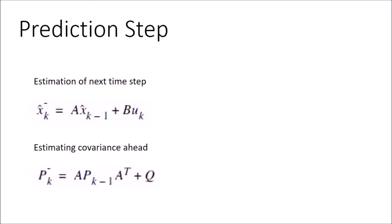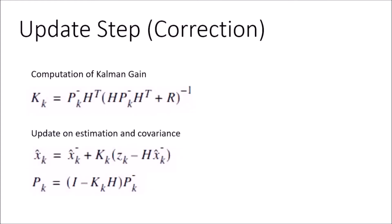In the prediction step, we first estimate the next system state, and we also calculate or estimate the next step covariance. In the update step, also known as the correction step, we first calculate the Kalman gain. Then, based on the Kalman gain, we make an update on our estimation and our covariance.